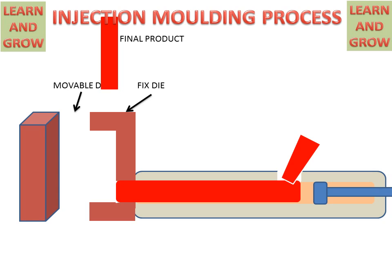This is the injection molding process. From this, we can get a final product of the desired shape, determined by the shape of the die.